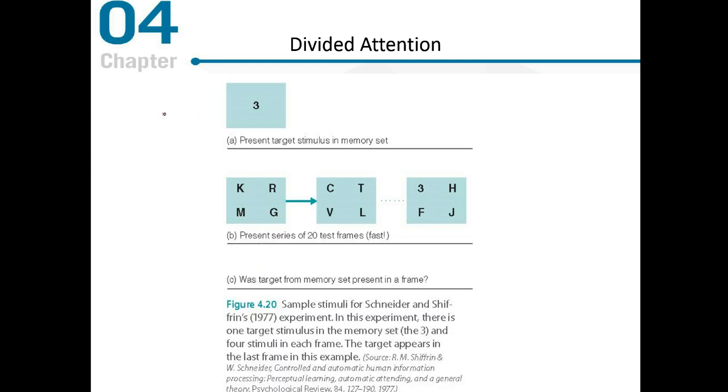Here is an example. In this picture there is this target stimulus in this memory set, and in this case there is only one target character, which is three. Then you can see that the participant is presented with lots of different test frames, 20 of them, and they are presented very fast. The target is asked which one of these test frames include this target stimulus, and of course in this case it is the last one that has the target stimulus in it.